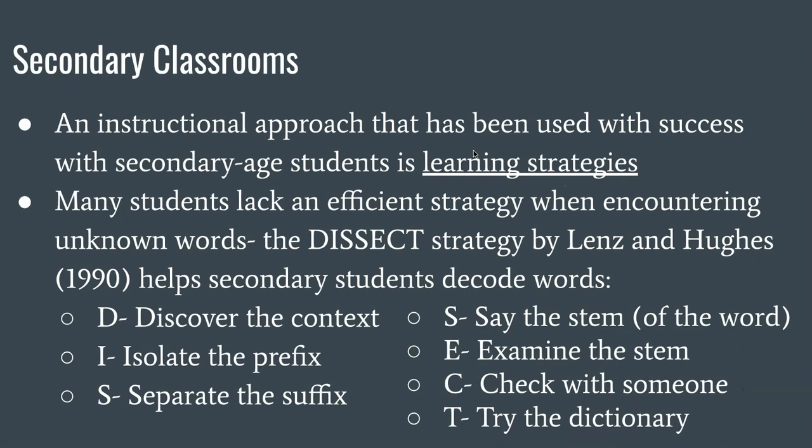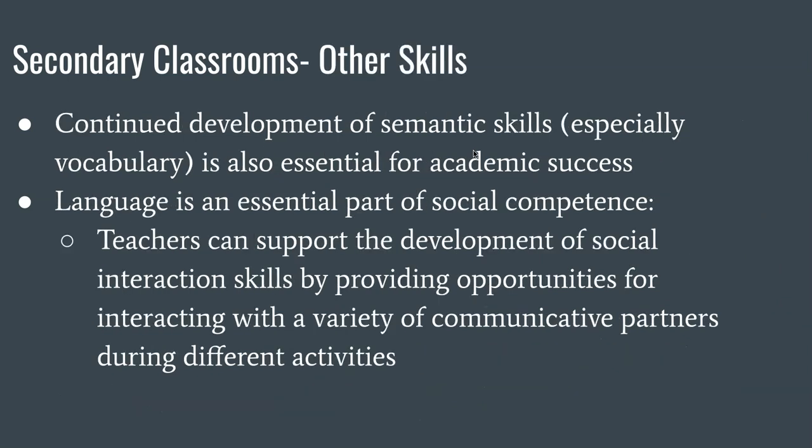An instructional approach used with success with secondary-age students is learning strategies. Many students lack an efficient strategy when encountering unknown words. The DISSECT strategy by Lentz and Hughes helps secondary students decode words: D — discover the context, I — isolate the prefix, S — separate the suffix, S — say the stem of the word, E — examine the stem, C — check with someone, T — try the dictionary. That's a lot of steps — I'd be worried that if we had a kid with a language disorder, that's too many steps.